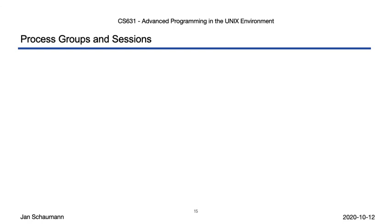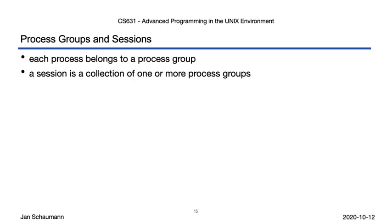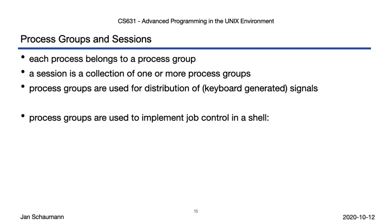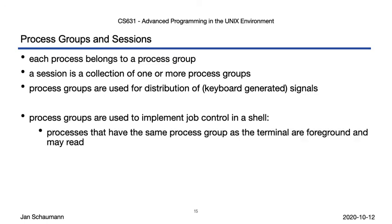Alright, before we move on to how the controlling terminal interacts with the background and foreground processes, let's recap. In addition to having a unique process ID, every process belongs to exactly one process group. Multiple process groups can be grouped together into a session. These process groups and sessions are used to distribute signals, allowing for the implementation of job control in the shell, introducing the concept of foreground and background groups of processes. Process groups in the foreground may interact with the controlling terminal, but what happens when a process group in the background wants to talk to the controlling terminal — either to read data or to write data? We'll see what happens then in our next video, so stay tuned. Thanks for watching. Cheers.